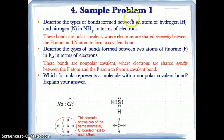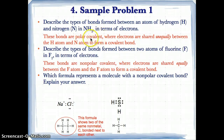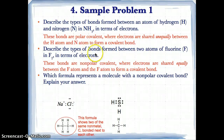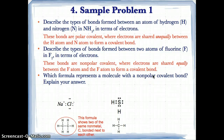Let's try sample problem one. Question one: NH3 — N and H are both nonmetals, but since they are two different nonmetals, the bond formed is polar covalent, where electrons are shared unequally between the H and N atoms. Question two: F2 — since F and F are the same nonmetal, the bond formed is nonpolar covalent, where electrons are shared equally between the two F atoms.